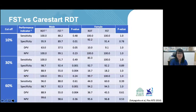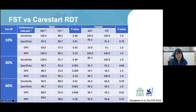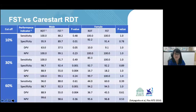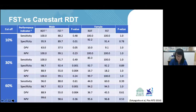Our group compared FST and CareStart RDT in collaboration with Professor Kevin Barrett's group, dividing results by males and females against the gold standard Trinity Biotech. Both the RDT and FST show almost 100% sensitivity at the 30% threshold in both males and females. However, when detecting females at lower thresholds, the sensitivity is greatly reduced compared to males, confirming that qualitative tests are insufficient for detecting intermediate heterozygous females.